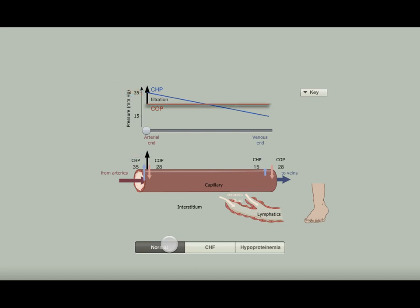The COP stays relatively constant along the capillary because almost none of the protein can cross the capillary wall. The CHP falls along the capillary because there is a pressure drop along the capillary proportional to the blood flow and the resistance of the vessel.